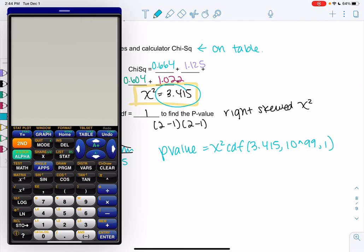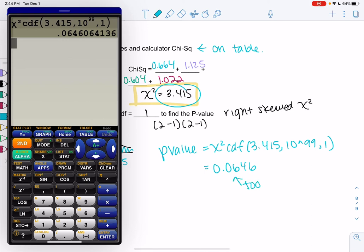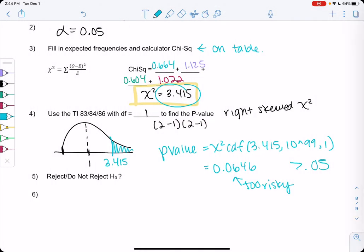So we get a p-value of 0.0646, which is small, but it's a little bit higher than we wanted. We decided that 0.05 was the most risk we'd take, so it's too risky. It's past that 0.05. So we do not reject.